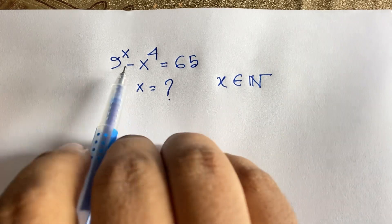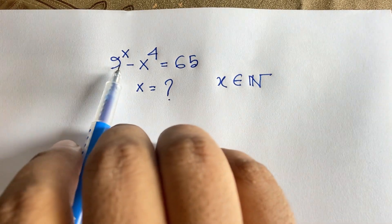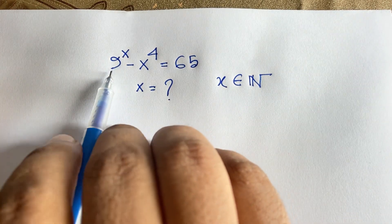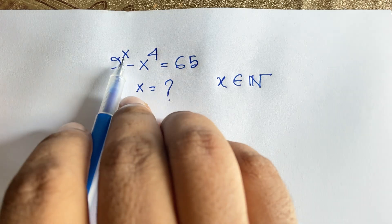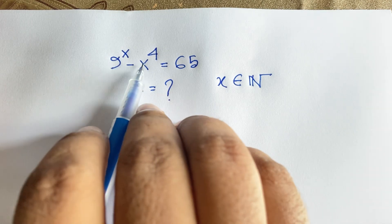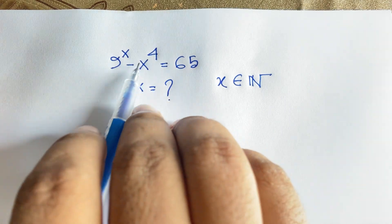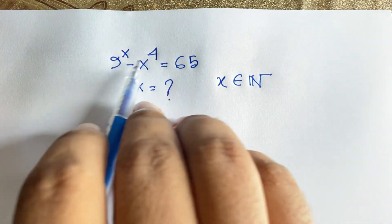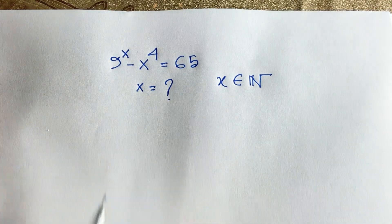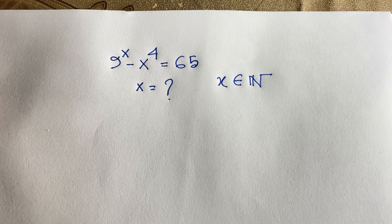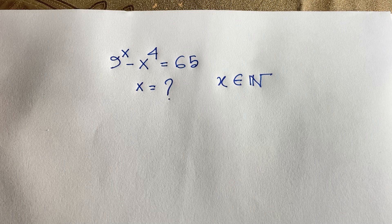If you think x is equal to 3, it is a big number. But if x is equal to 2, then 9 to the power 2 is 81, and 2 to the power 4 is 16, so 81 minus 16 equals 65. You can easily say x is equal to 2 in this exponential equation.